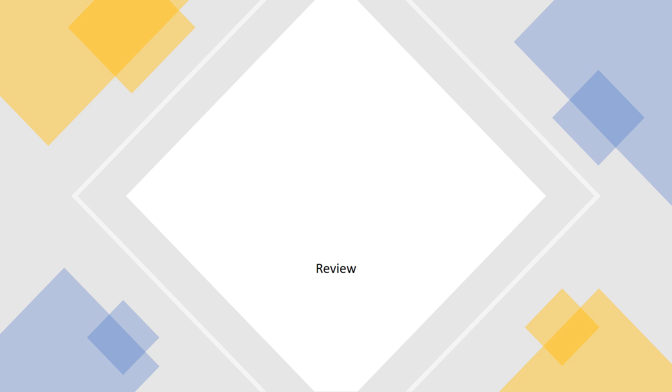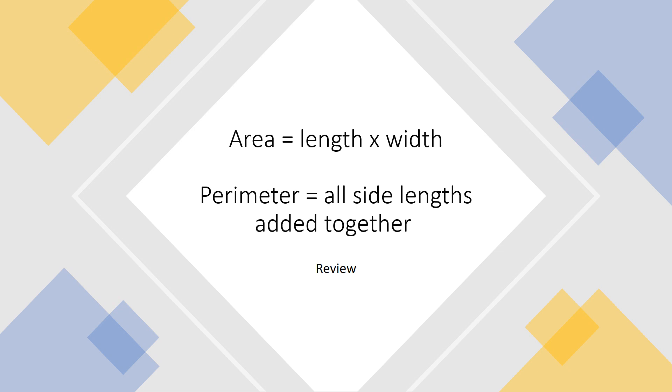A quick review of how we get these measurements. First with area to find the inside of a figure, we do length times width. For perimeter to find the measurement of the outside, we need to add up all the sides together.